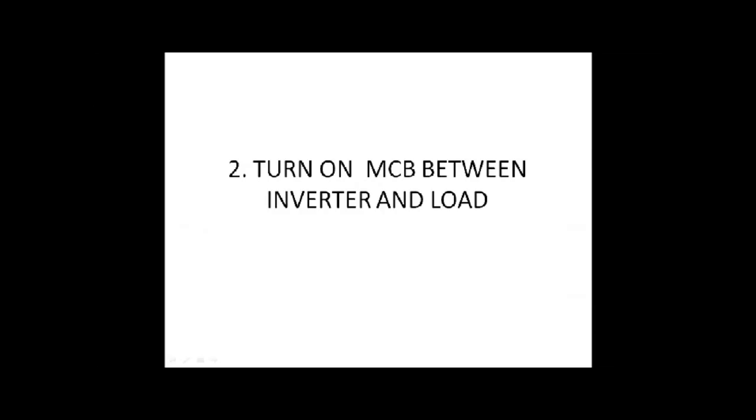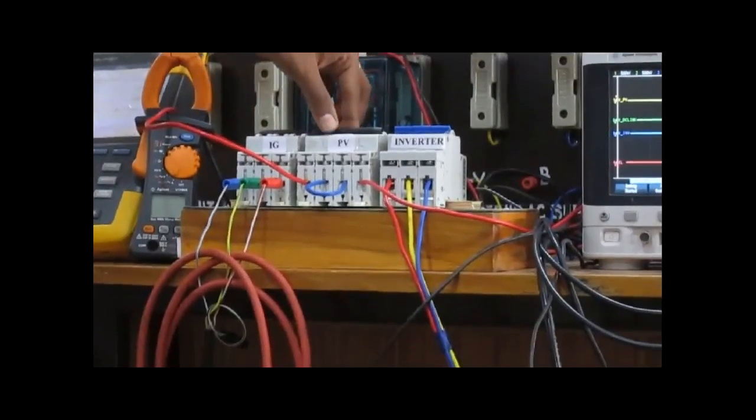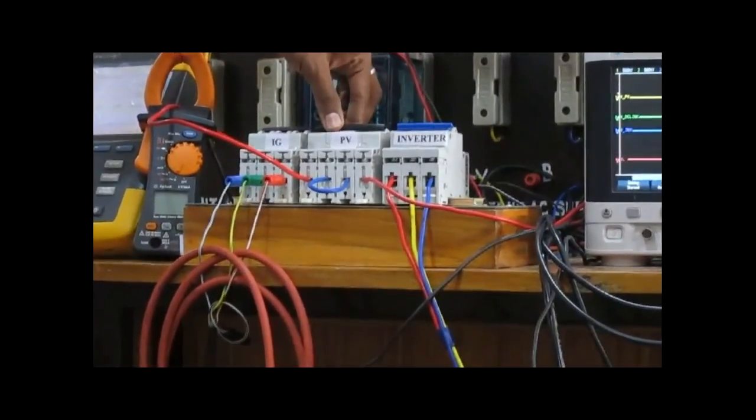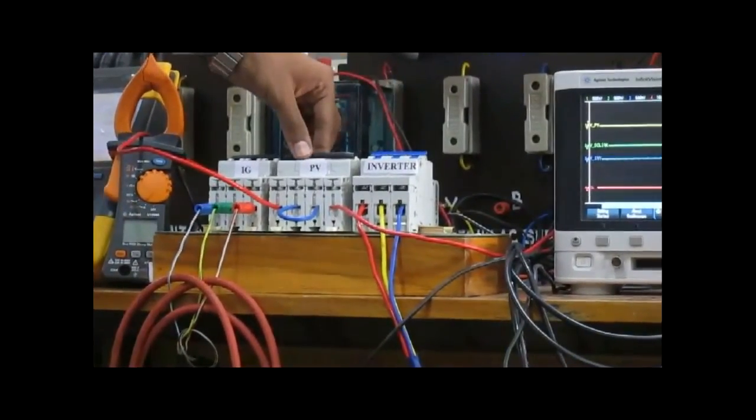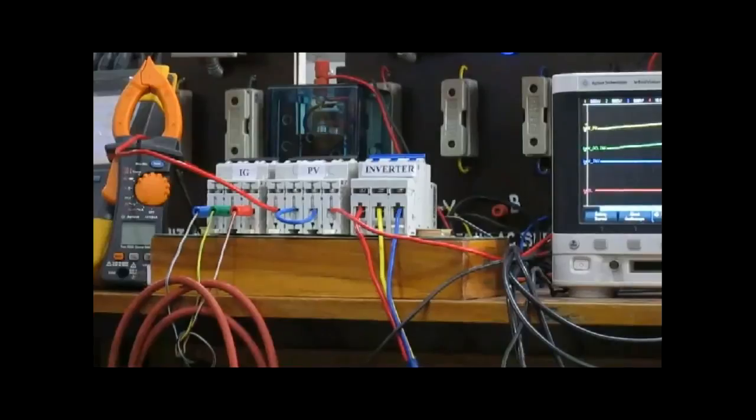Some sequence of operation is listed on the screen. First we turn on the PV MCB. Then we turn on the MCB between inverter and the load. Then we turn on the IG MCB. Once the wind speed or the speed of the wind turbine increases the cut-in speed, it automatically is synchronized with the system which will be demonstrated now.